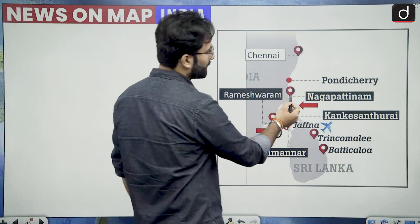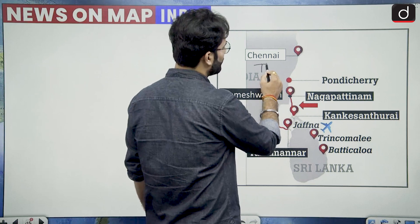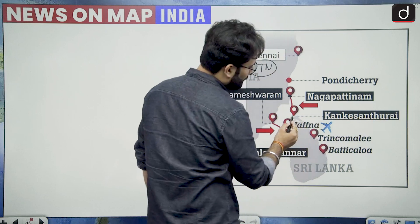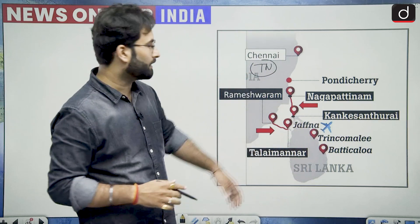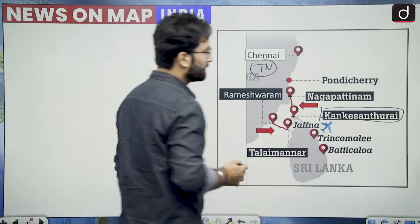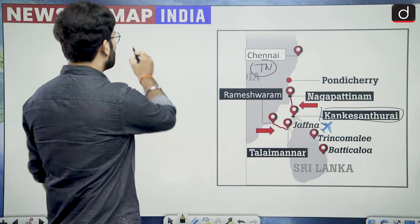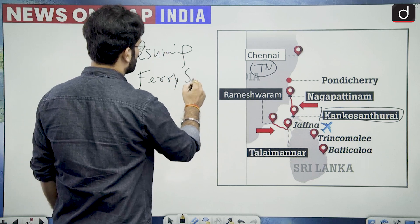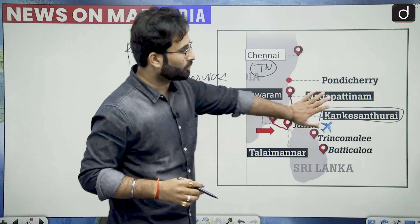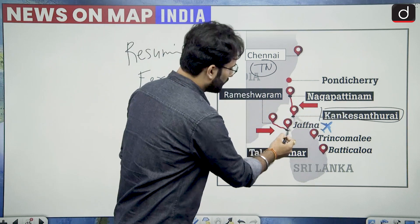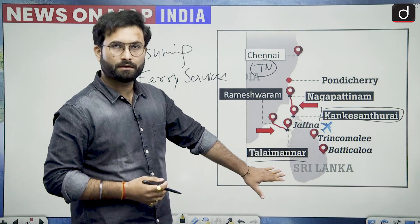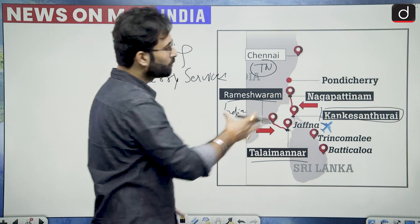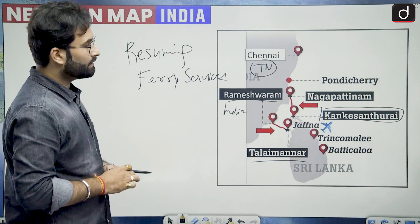Here you can see that this is Nagapattinam — it is in Tamil Nadu, so it is in India. Kankesanturai is the northernmost point of Sri Lanka. In this particular visit, the President and our Prime Minister talked about resuming ferry services between these two particular places — beyond this, Rameshwaram to Talaimanar. Talaimanar is in Sri Lanka and Rameshwaram is in India. So these two ferry services are to be started between India and Sri Lanka.